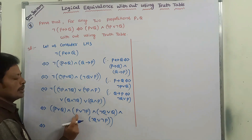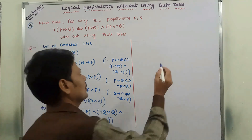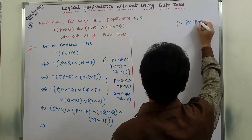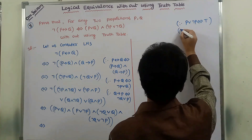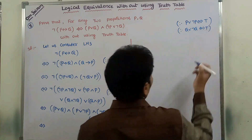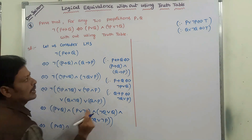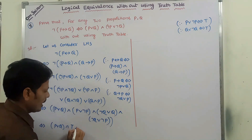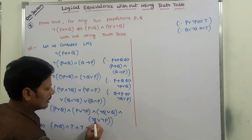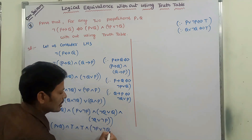We already know that P or negation P is logically equivalent to true, and negation Q or Q is also true. Writing these: P or negation P is logically equivalent to true, and Q or negation Q is logically equivalent to true. So now P or Q is combined with these true values.